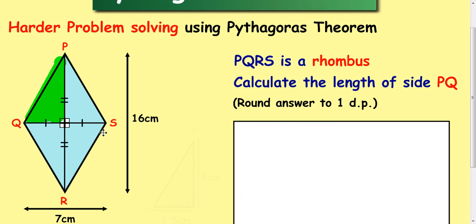So all the way across is seven centimetres. And these two lines here means that that line and that line are the same length. So if you halve seven, you'll get the bottom bit of this right angle triangle and that's 3.5.